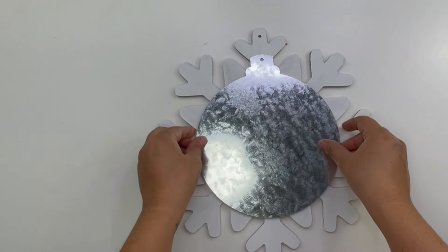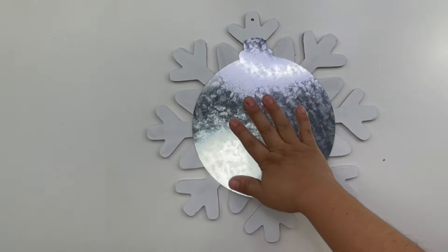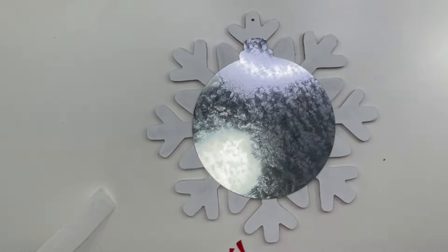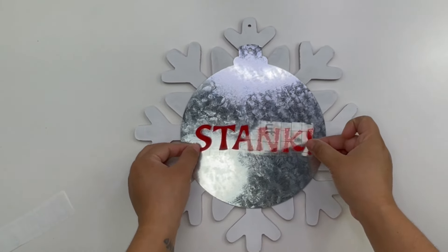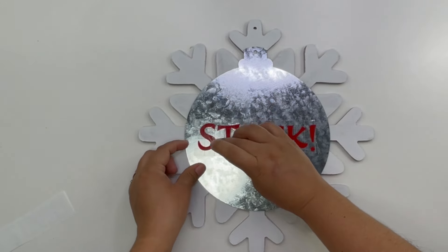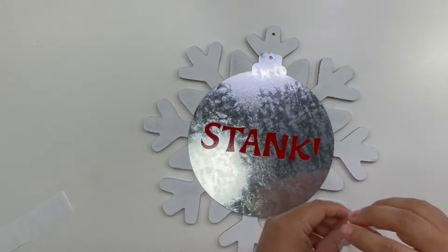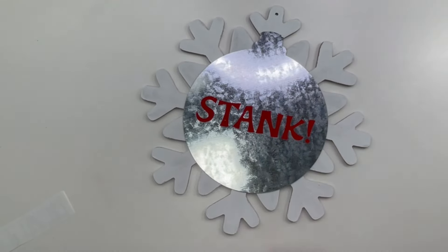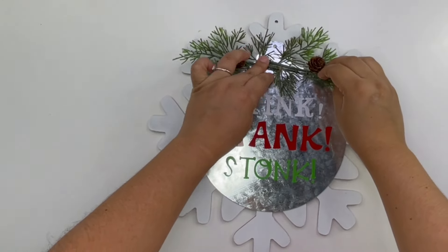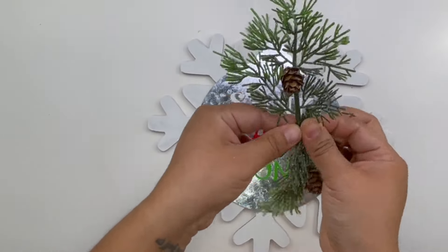For this next step I did use my Cricut. I cut out the words stink, stank, and stunk with different colors. Now if you don't have a Cricut you can always just go to Hobby Lobby and pick up their poster sticker letters. To decorate this a little more I just added some greenery at the top of the ornament with a bow.